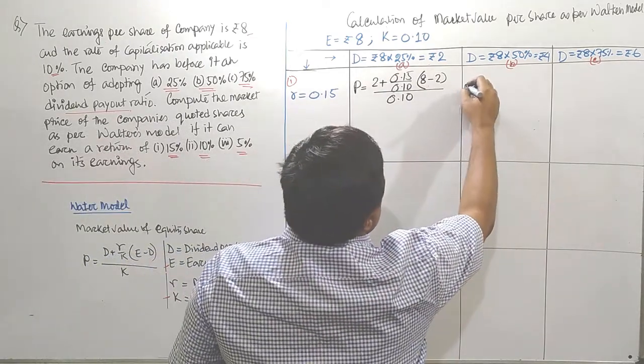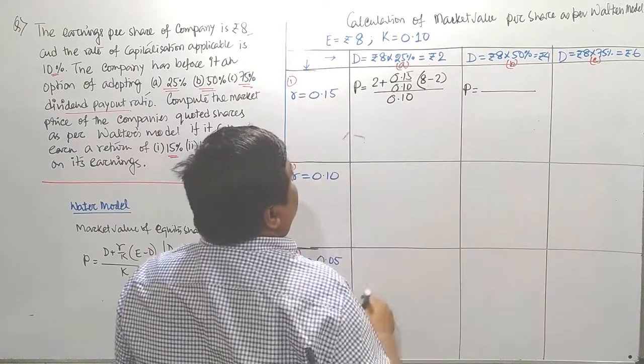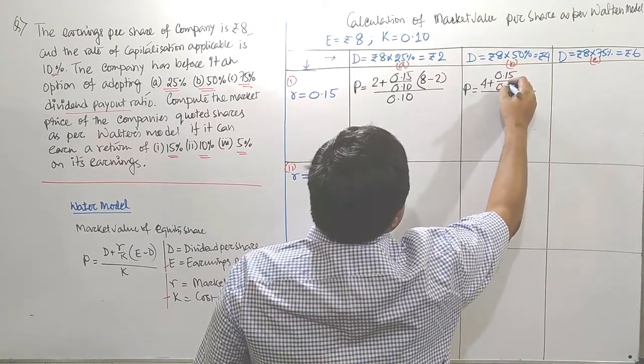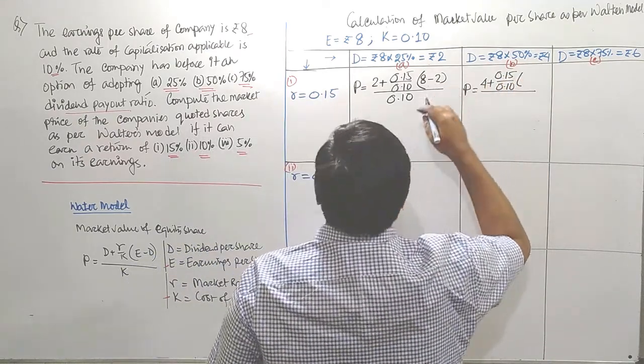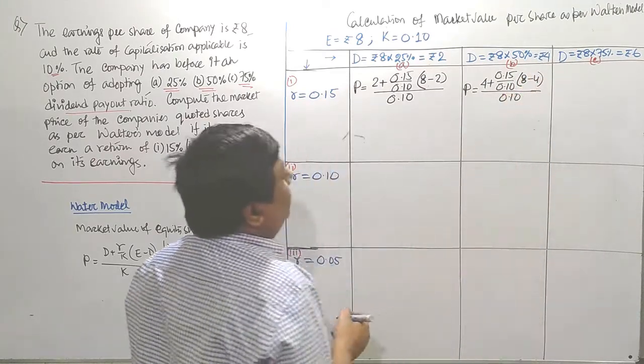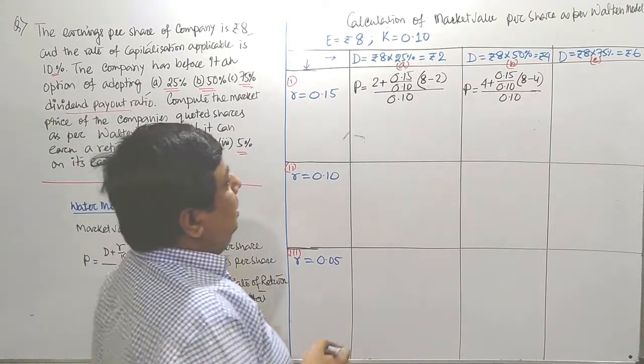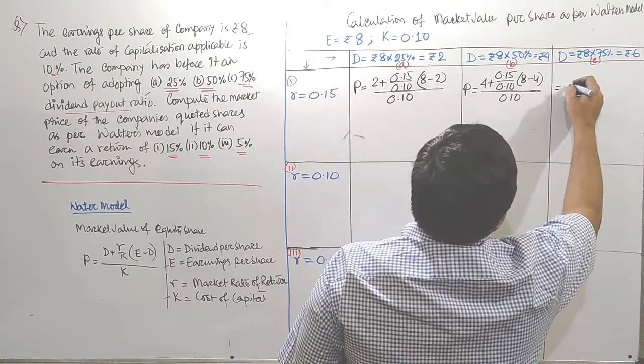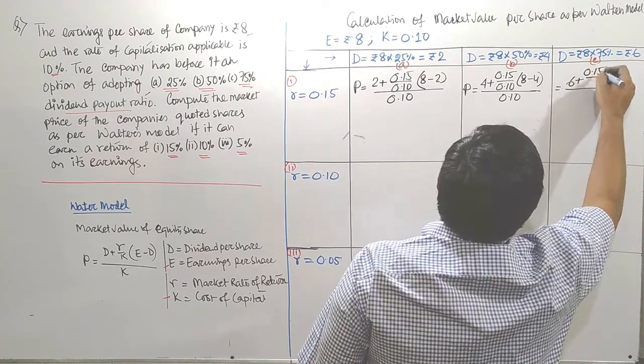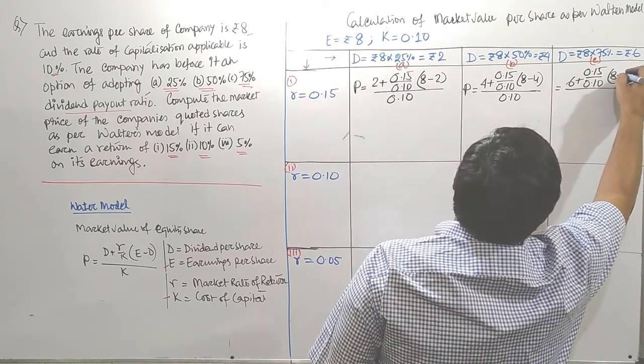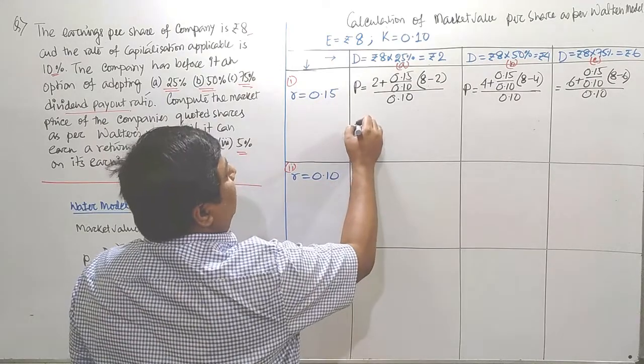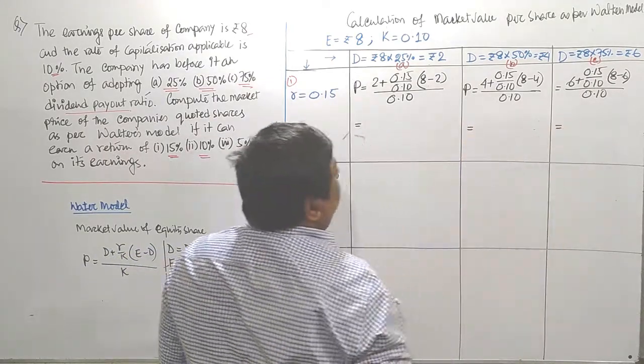Similarly, in the second case, where I only have to change the D. D is 4 plus the other things remain the same, R and K. E minus D, E is 8, D is 4, all divided by K, 0.10. In row 1 column 3, it is 6 plus 0.15 by 0.10, 8 minus 6 divided by 0.1. Now we have to calculate one after one.